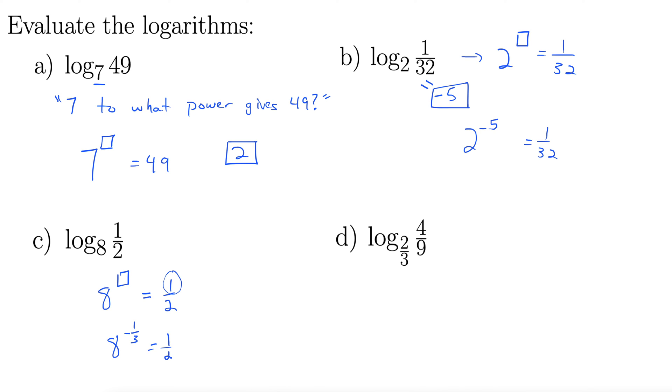Let's work this out. 8 to the negative 1/3 is 1 over 8 to the 1/3. But that's simply 1 over the cube root of 8, and the cube root of 8 is 2. So we get 1/2, which is what we wanted. The answer is negative 1/3.